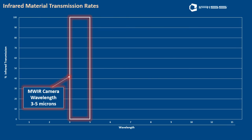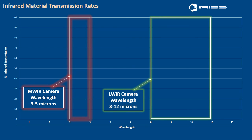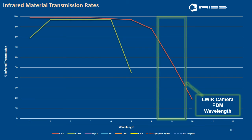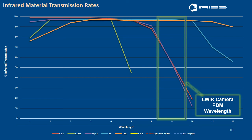There are two wavelengths primarily utilized in today's infrared industry: the mid-wavelength which is 3 to 5 microns, and the long wavelength which is 8 to 12 microns — where 99% of the equipment operates, and most likely the camera you're using is a long wave infrared camera. Looking at the PDM wavelength of 8.5 to 9.5 microns, we can see where different material transmissions fall. The materials include: calcium fluoride, sapphire, magnesium fluoride, germanium — the material your camera lens is made from — zinc selenide, barium fluoride, opaque polymers, and clear polymers.